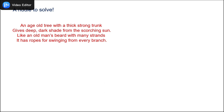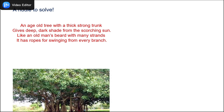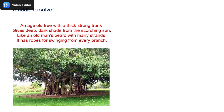A riddle to solve. An age-old tree with a thick strong trunk gives deep dark shade from the scorching sun. Like an old man's beard with many strands, it has ropes for swinging from every branch. I'm sure you've guessed it, children. You're right — it is the banyan tree.